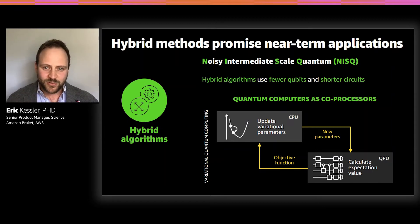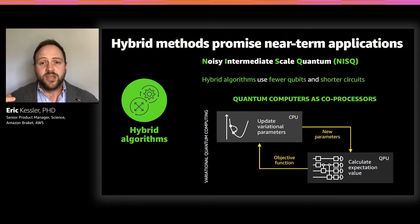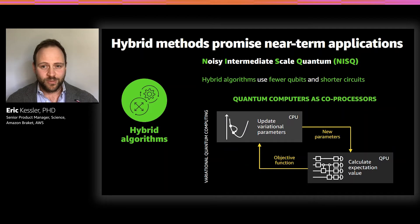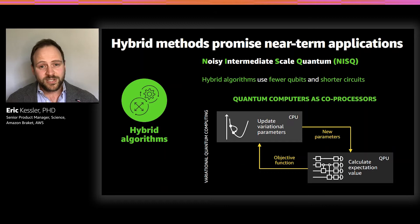Instead of constructing a quantum algorithm from the bottom up, you turn it around and say: I have a device that I know can do a certain class of computations. So I'm just going to tell my algorithm what I want to achieve, but I leave it up to the algorithm to iteratively find the best combination of operations within those bounds of my device to solve the problem that I have.